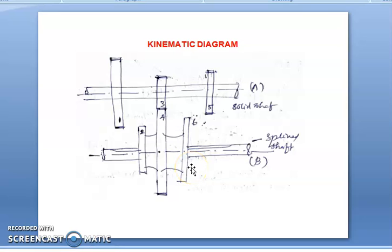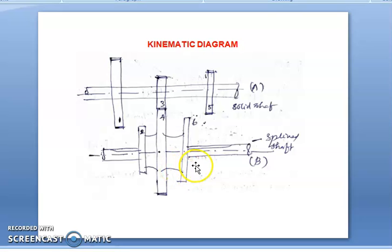By means of a lever, we can change the position of the meshed gear and make them engage with other fixed gears so that we can obtain different speeds. From this diagram, gears 1, 3, and 5 are fitted on the solid shaft A, and gears 2, 4, and 6, which are meshed together and act as a single unit, are fitted on the splined shaft B.